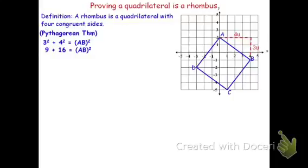3 squared is 9, 4 squared is 16, 9 plus 16 is 25. Now, that's AB squared. In order to find the length of AB, we square root both sides. So, AB is the square root of 25, or 5 units.